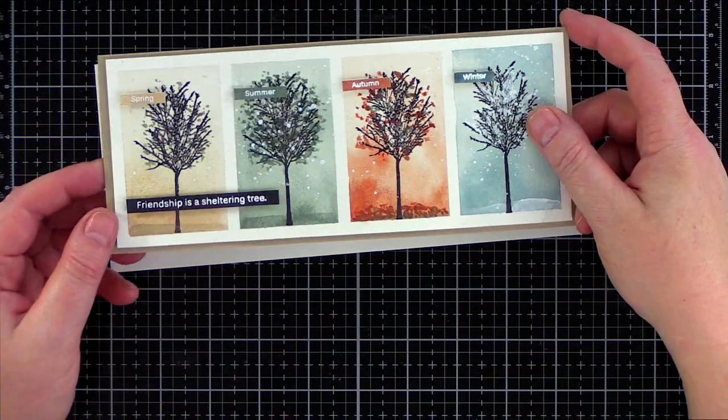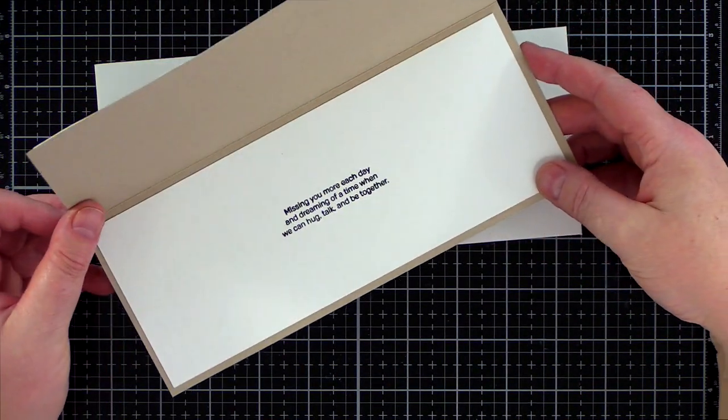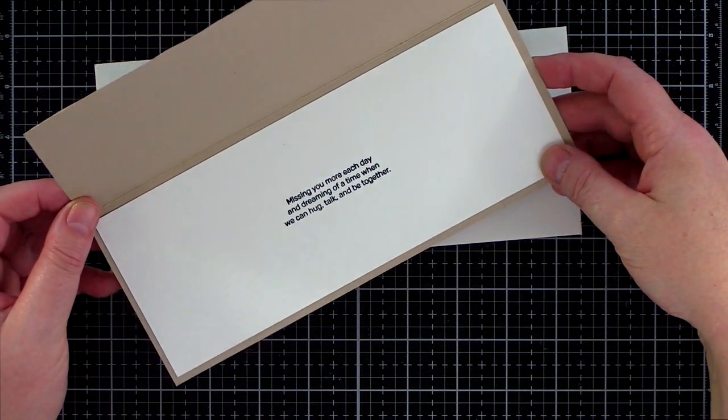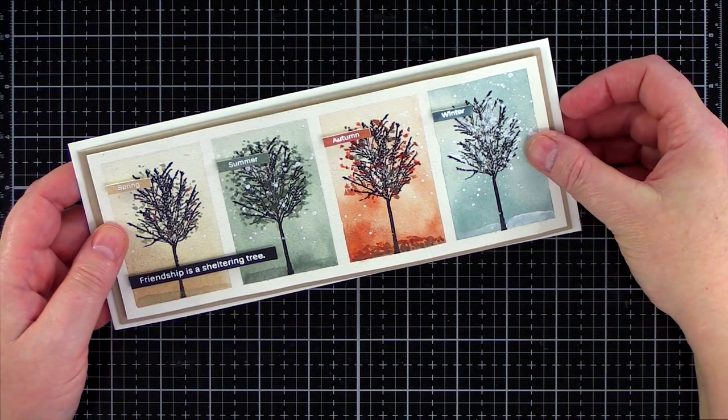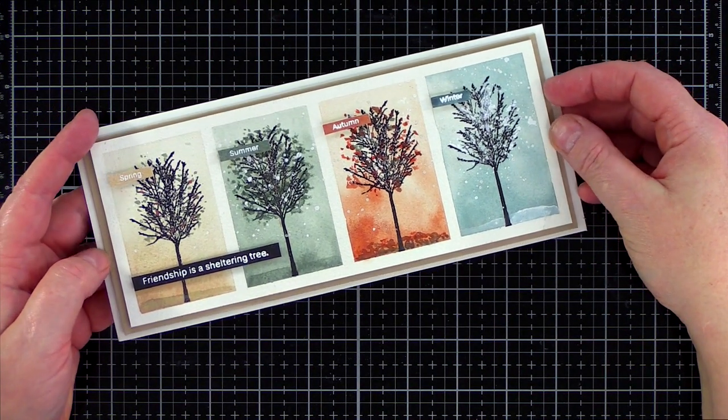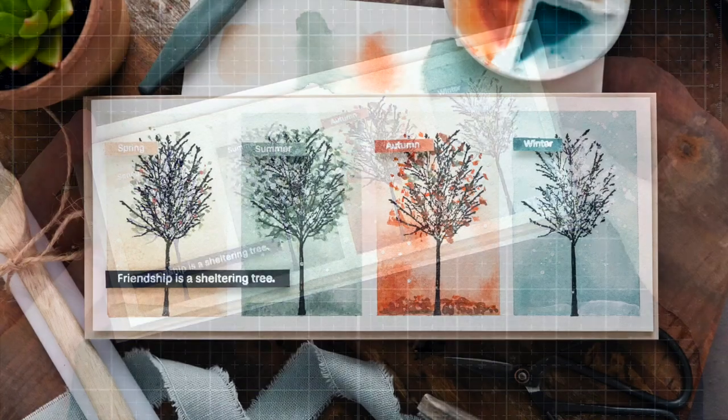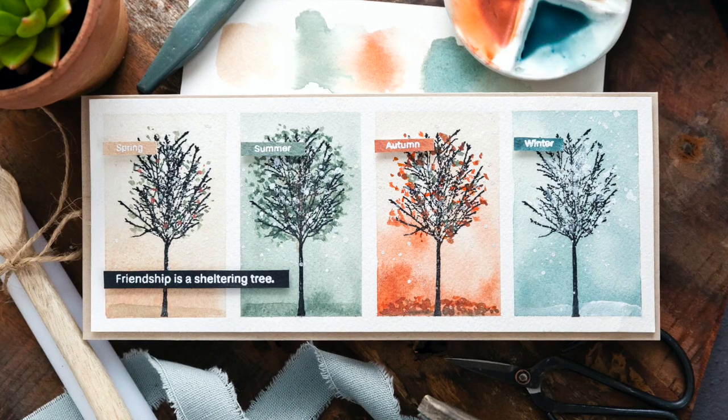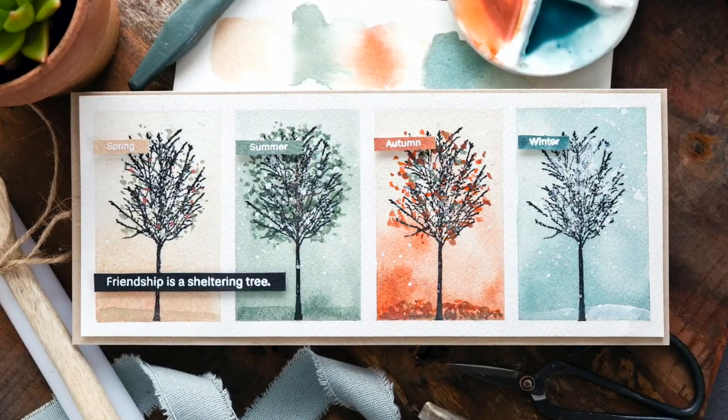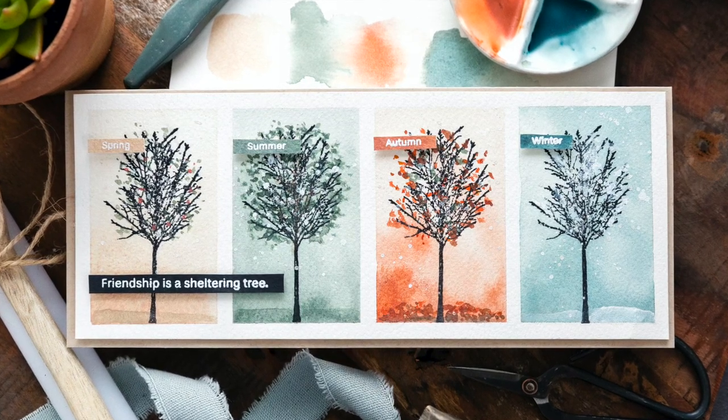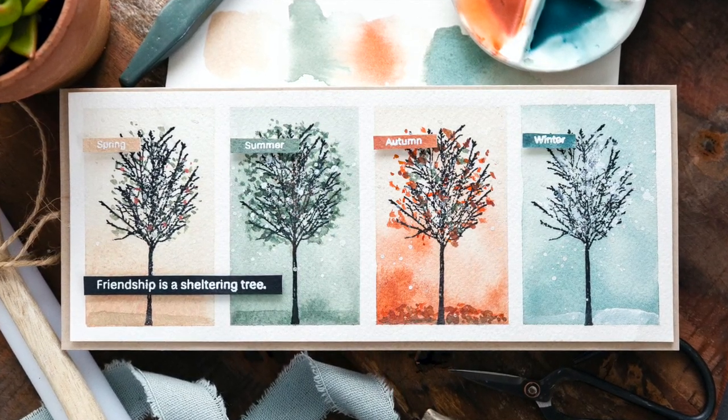And there you go, a four seasons watercolored tree card in the slimline size made to perfectly fit a slimline envelope. I'm glad I stuck to my color palette, and although the colors aren't traditional, I still feel each block represents the seasons with a sparsely covered spring tree with new leaves unfurling to the full canopy of summer, rich orange tones of autumn, and bare icy branches of winter.